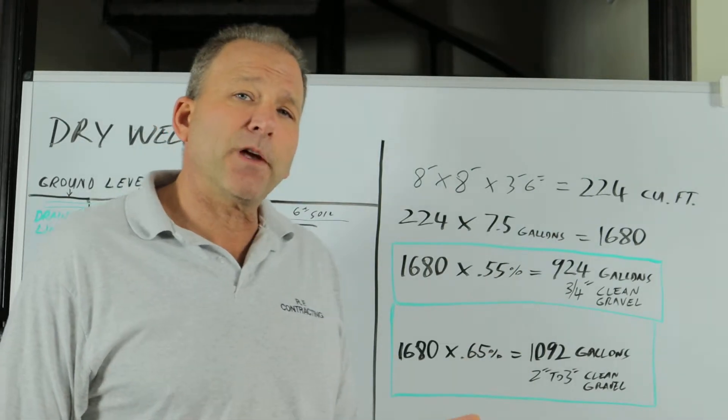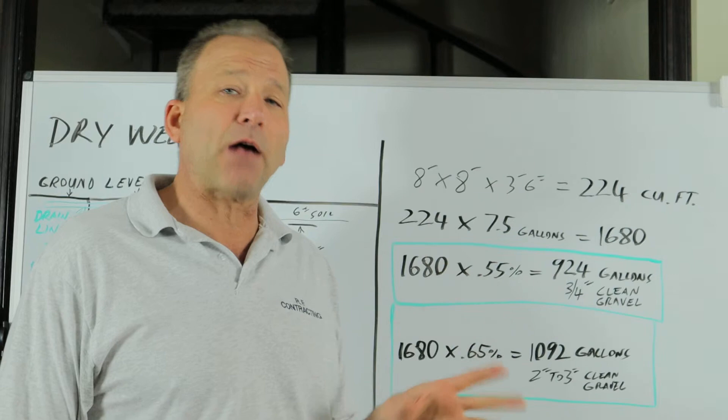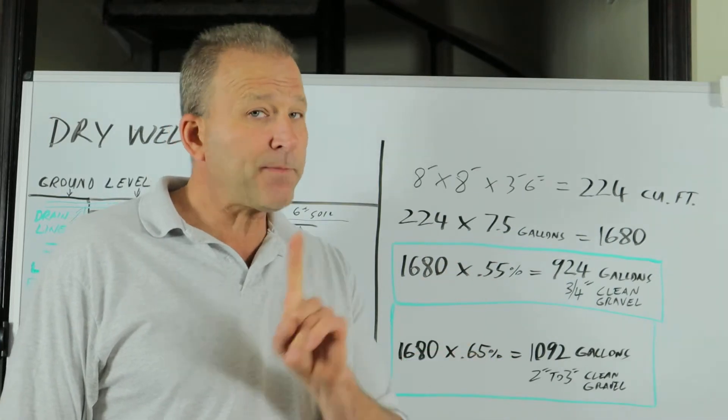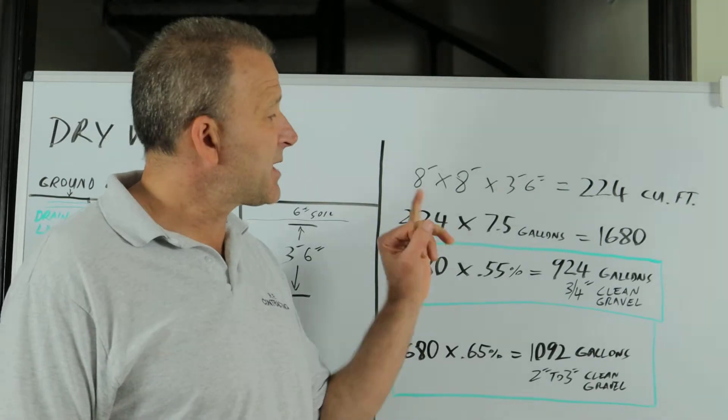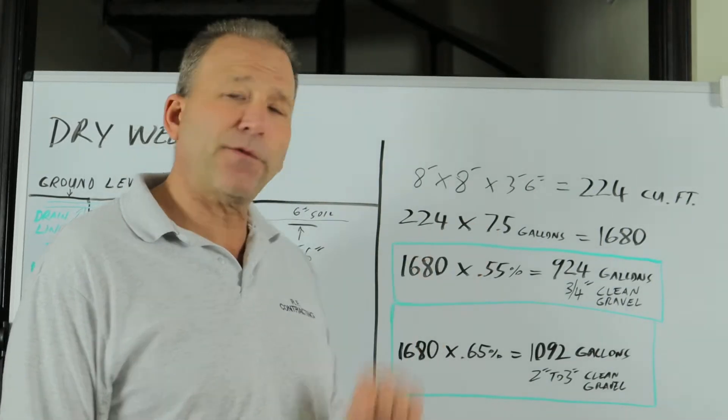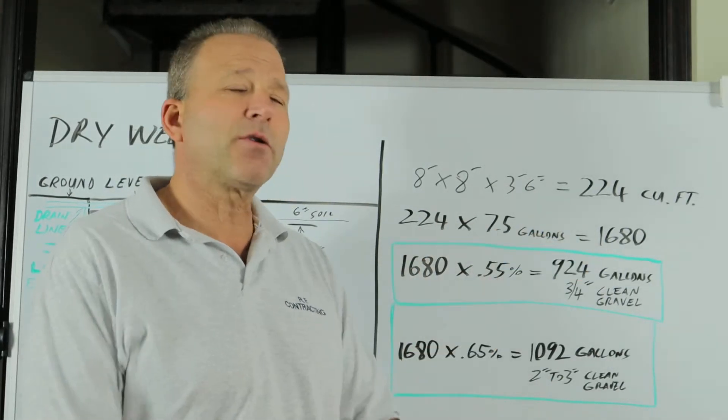Each cubic foot holds seven and a half gallons of water when empty. So 224 cubic feet times 7.5 gallons per cubic foot equals 1680 gallons.